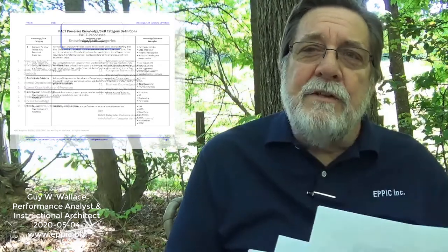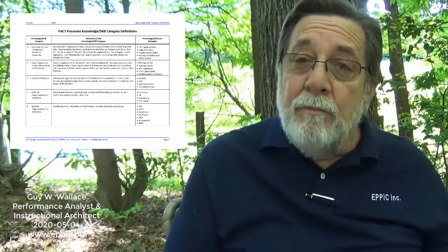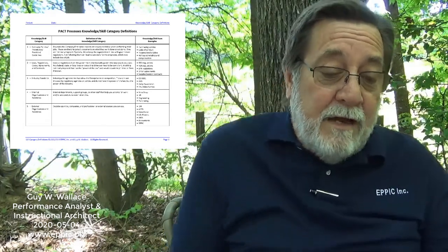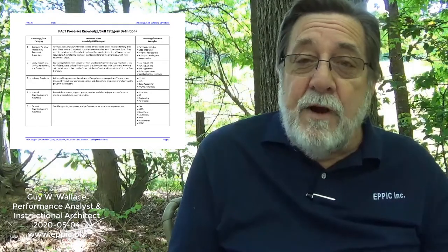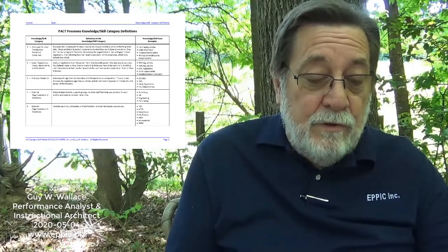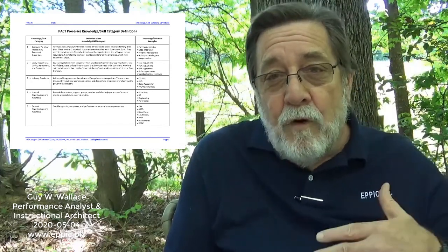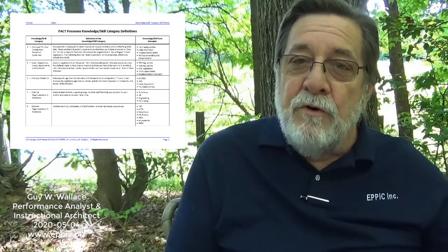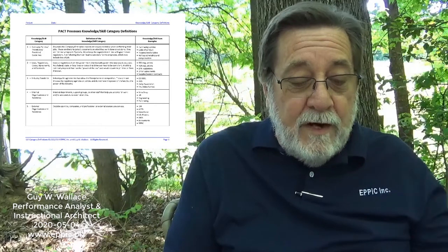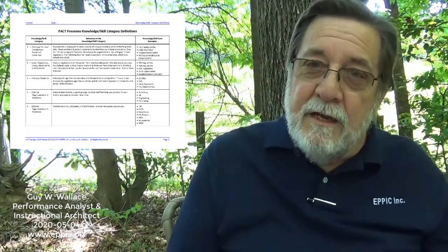The categories are not all used typically in any particular project. Starting with number one: company policies, procedures, practices, and guidelines — these are the rules prescribed to performers internally, so these are the internal rules. The second category of knowledge and skills covers laws, regulations, codes, agreements, and contracts — these are the externally imposed rules.